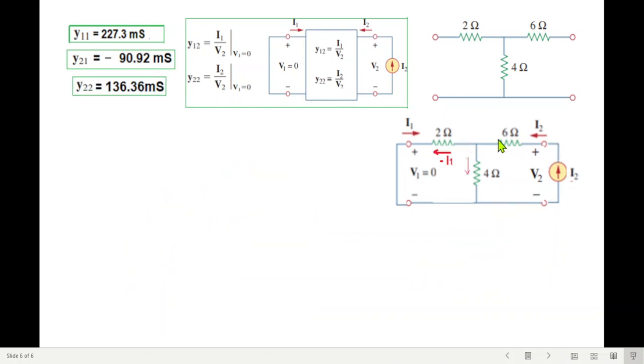Same circuit. Here also, we'll use the CDR rule. Current entering and going in two ways. Since i1 is given from left to right, but our current is moving from right to left, we'll put a negative sign here. So negative i1, by CDR: negative i1 is total current i2 divided by total resistance multiplied by the opposite arm.